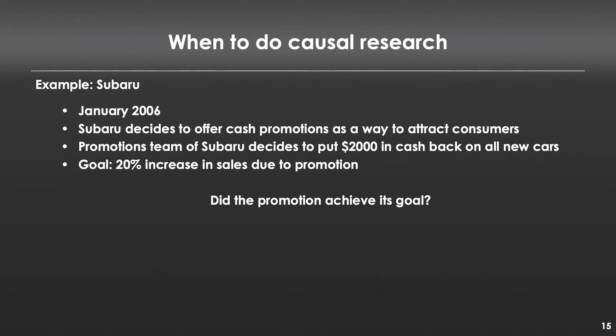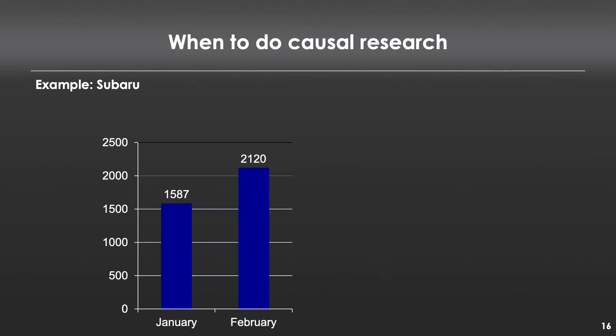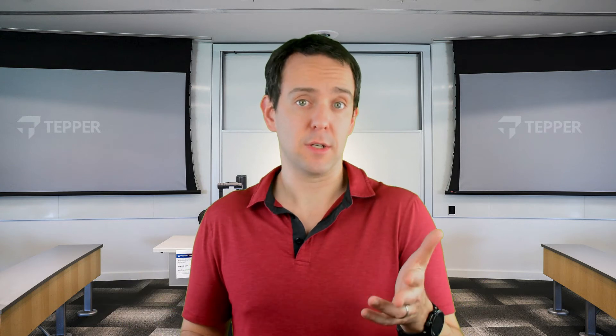The only way we can actually make a causal claim is with an experiment — I'll show you that in a moment. But first, let me give you an actual marketing context. Back in 2006, Subaru decided to offer a cash promotion to attract customers. The promotions team put $2,000 cash back on new cars as their main offer, with a goal of a 20% increase in sales. So we might want to ask: did the promotion work? Here are the data for January and February of that year, and you can see a substantial increase in sales — actually a 33% increase in New England. But did the promotion work? I hope you see that we don't know. This is an example of a correlation: something changed (the promotion) and something else changed (sales), but we don't know that those two were causally linked.